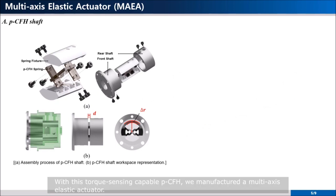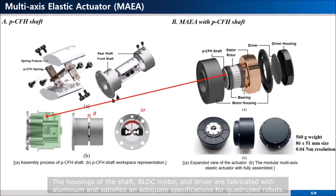With this torque sensing capable PCFH, we manufactured a multi-axis elastic actuator. A polycarbonate PCFH shaft that endures external impact is designed to be compact to fix it in a BLDC rotor. The housings of the shaft, BLDC motor, and driver are fabricated with aluminum, and satisfy the created specifications for quadruped robot.